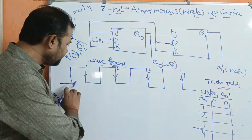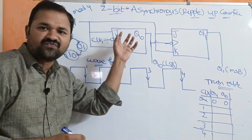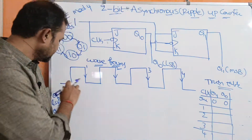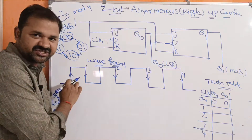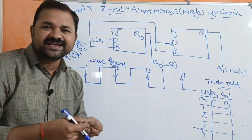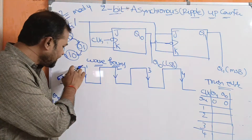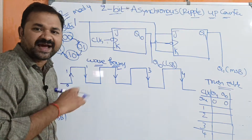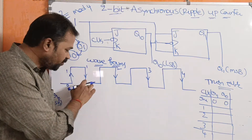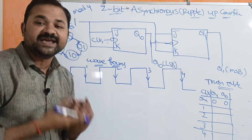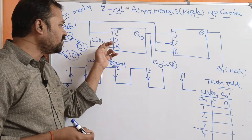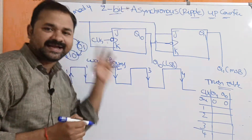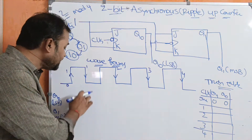Now let us see the waveforms. We have 4 clock pulses because there are 4 states, and for each state we have one clock pulse. Every clock pulse has two edges: the rising edge (positive edge), which is the transition from 0 to 1, and the falling edge (negative edge), which is the transition from 1 to 0. Since we have a bubble, the flip-flop triggers at the negative edge.